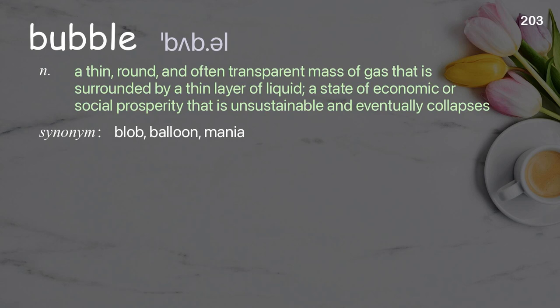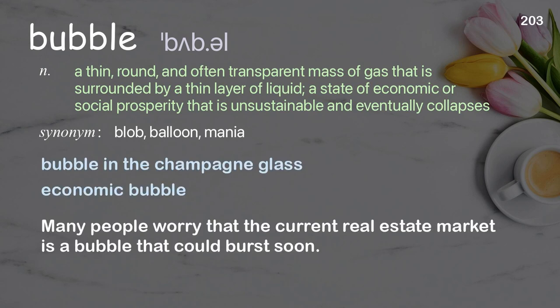Bubble: a thin, round, and often transparent mass of gas surrounded by a thin layer of liquid; a state of economic or social prosperity that is unsustainable and eventually collapses. Examples: bubble in the champagne glass; economic bubble; many people worry that the current real estate market is a bubble that could burst soon.